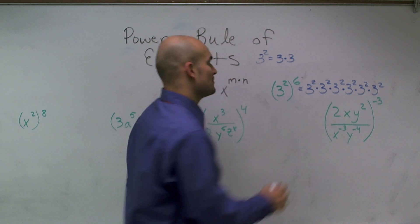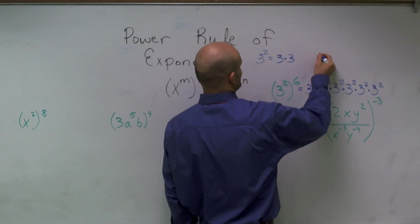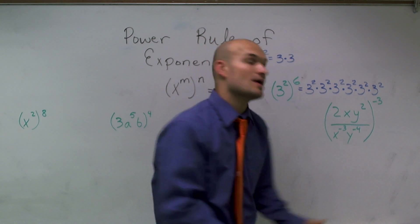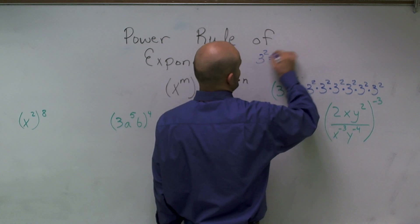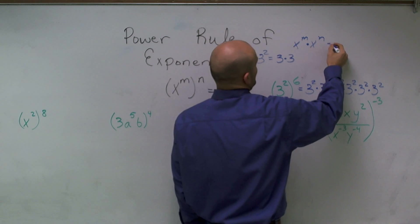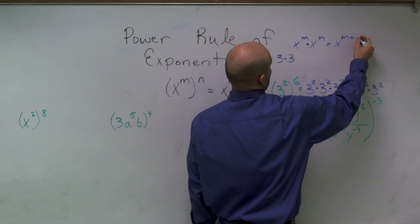Now, the next thing we should remember is the product rule. We also need to know the product rule, which states if I have a number x to the m times x to the n, then I'm going to add my exponents.